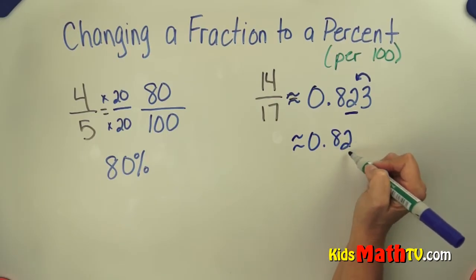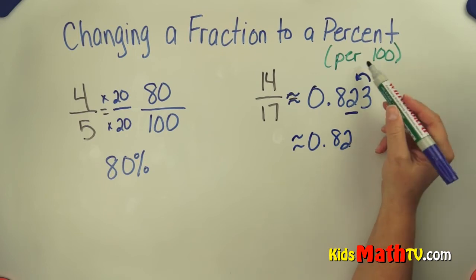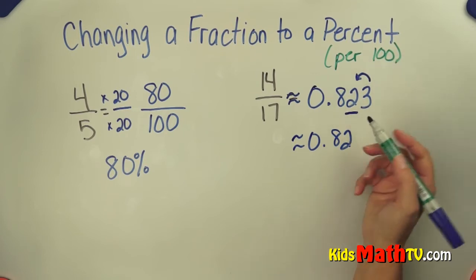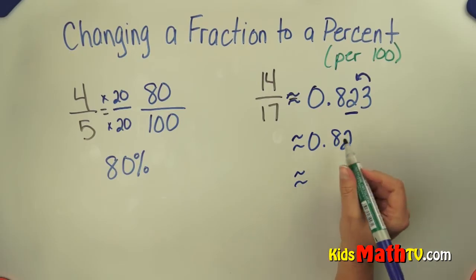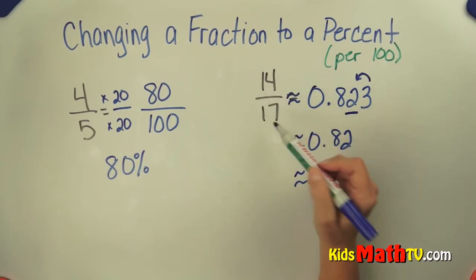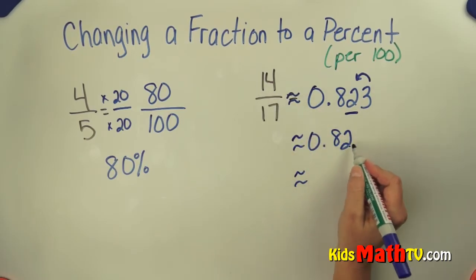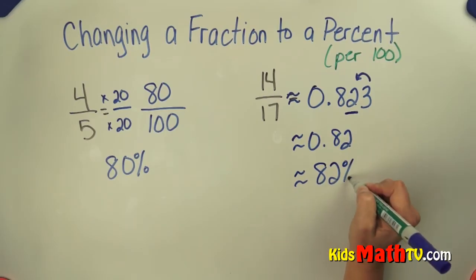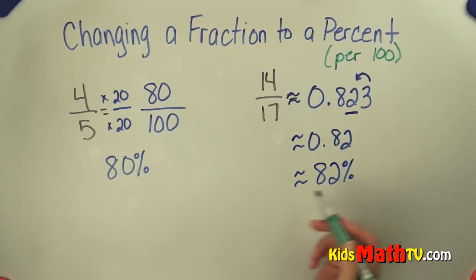We read that as hundredths, so it's 82 per 100. So 82 hundredths is approximately equal to 82 percent. Both of our numbers came out to be about 80 percent.